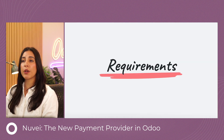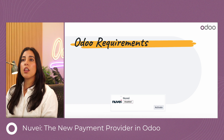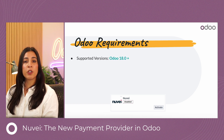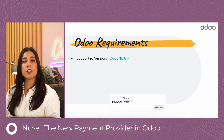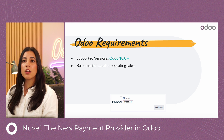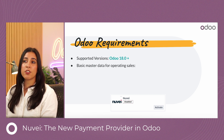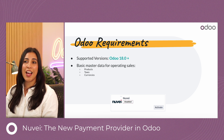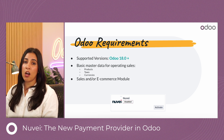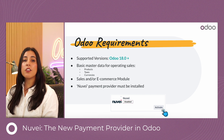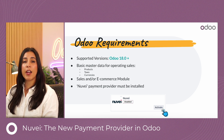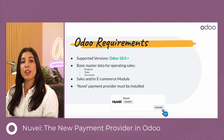Now the requirements. In Odoo, the supported version is version 18 and beyond. You need basic master data for operating sales such as products, taxes, and currencies. You need the sales and e-commerce modules, and you need to ensure that the Nuve payment provider has been installed.